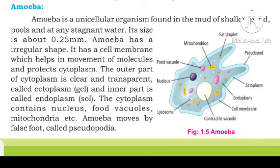Now, the unicellular organism example is amoeba. Amoeba is a unicellular organism found in ponds, pools, and fresh water. Its size is about 0.25 mm.